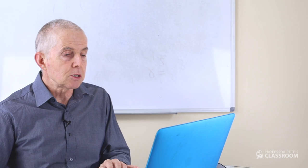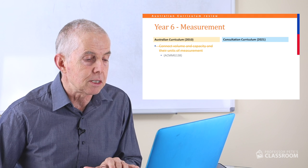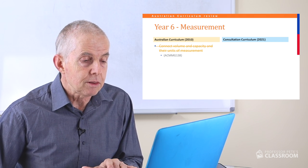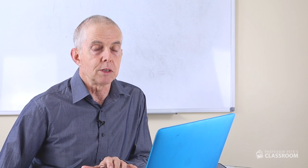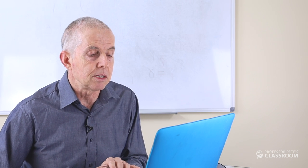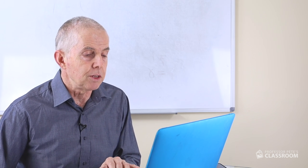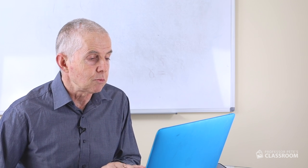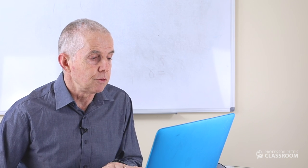The last content descriptor for measurement has not appeared in the new one — it was 'connect volume and capacity to the units of measurement' in the old curriculum. I am sorry to see this go. I think volume and capacity are two very important attributes, and knowing the difference and how the units are applied is important. I'm hoping that this appears in later years of the curriculum.